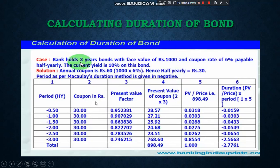Then you multiply the present value factor by the cash flow amount. For example, the present value of the first period comes to 28.57. We continue this for all periods and sum them up to get a total present value of 898.49 rupees. Now you need to get a weightage: divide each period's present value — for example 28.57 — by the total price of 898.49.